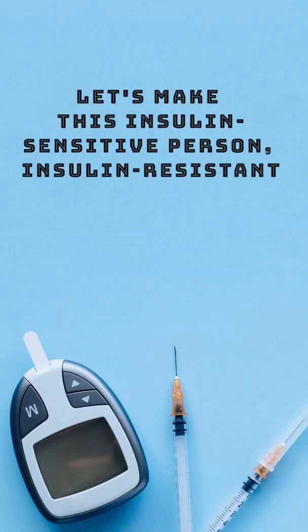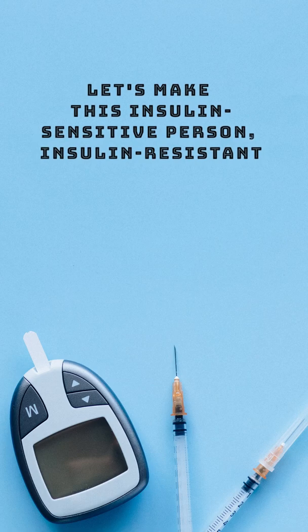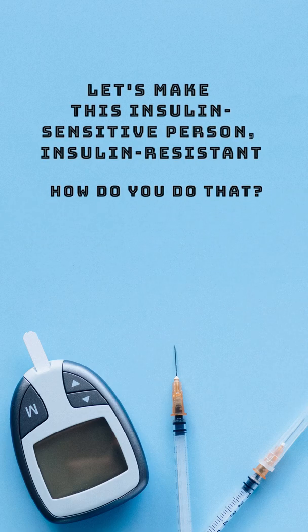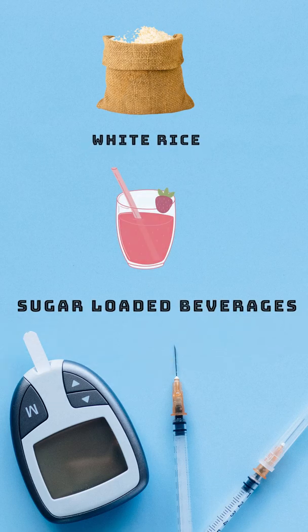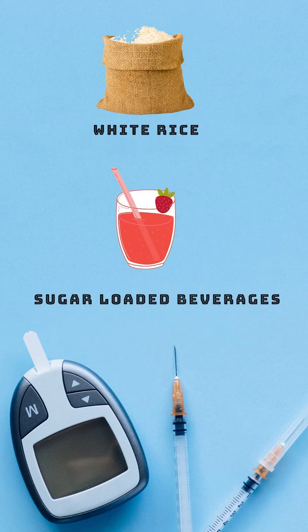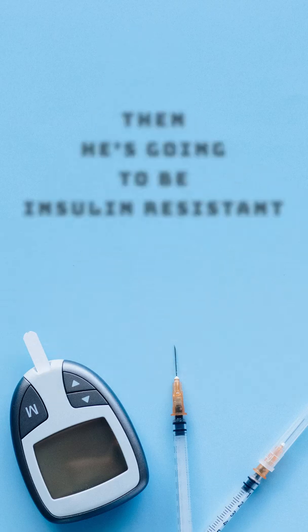Now let us make this insulin sensitive person insulin resistant. How do you do that? It's simple. Just make him physically inactive, don't allow him to exercise, give him loads of high glycemic index foods like white rice and sugar loaded beverages — then he's going to become insulin resistant.